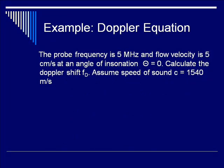Let's do an example. The probe frequency is 5 MHz, flow velocity of blood cells is 5 cm per second, and the angle of insonation theta is 0 degrees. Calculate the Doppler shift F_D, assuming the speed of sound is 1540 m per second. Is the answer A: 33 Hz; B: 130 Hz; C: 325 Hz; or D: 3,000 Hz (3.3 kHz)? Pause the video to figure out the answer.